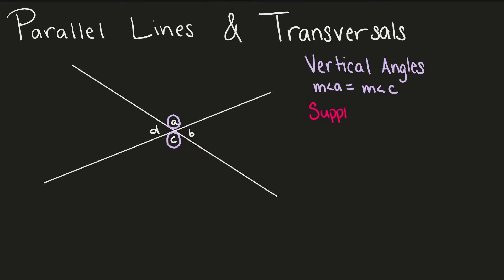We also have supplementary angles. Supplementary angles will add up to give us 180 degrees. Angle A and angle B are supplementary angles because when we look at a straight line, that is 180 degrees all the way across. If we cut that line at any point and make two angles in between them, those two angles will add up to 180 degrees. Therefore, angle A and angle B are supplementary and add up to 180 degrees.